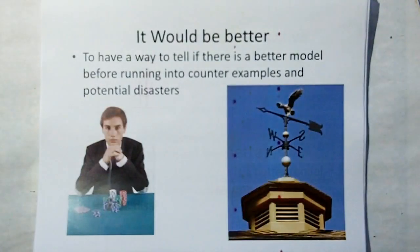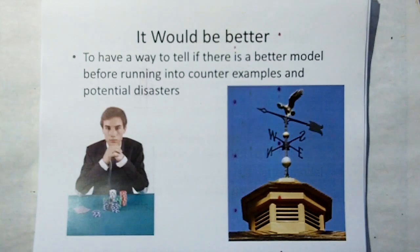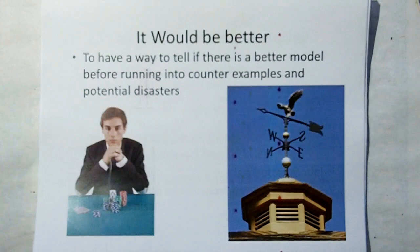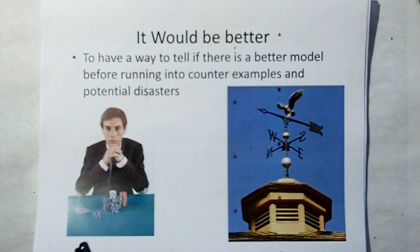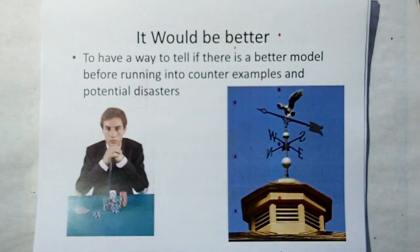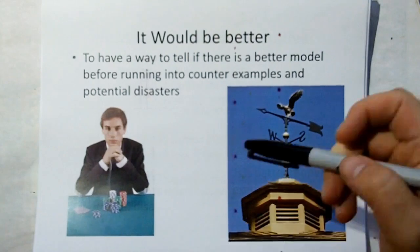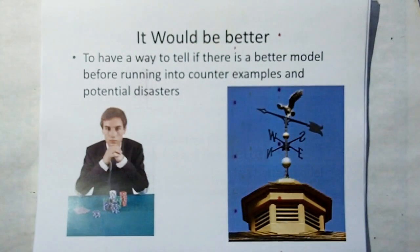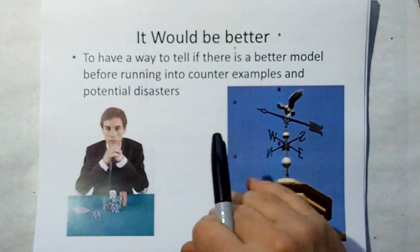It would be better to have a way to tell if there is a better model before running into counterexamples and potential disasters. In poker, people have little nervous twitches that tell you they're bluffing. Or you have a weather vane, which tells you which way the wind is coming from even though you can't see the wind. So what we need is what's called a tell.